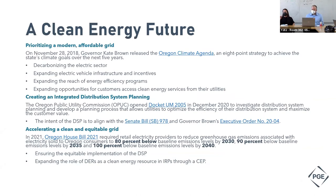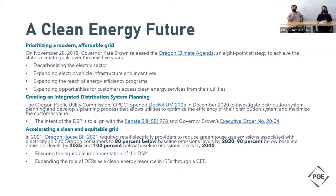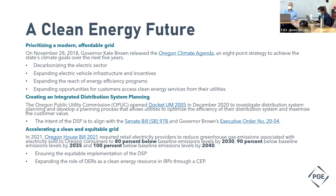It started with the governor's climate legislation or executive orders focused on modernizing the grid with equity components, and has really transitioned through a series of regulation and legislation into House Bill 2021, which was enacted last year. It has a clean energy target to get Oregon to 100% clean by 2040, and ensures that the investments we make are equitable — there's language throughout about the equitable implementation of the distribution system plan and our integrated resource plan. There's no shortage of commission directives to answer this question; the challenge is how to wrinkle them all together.